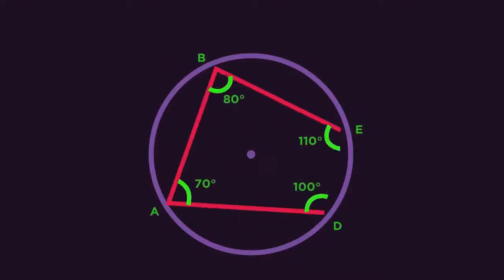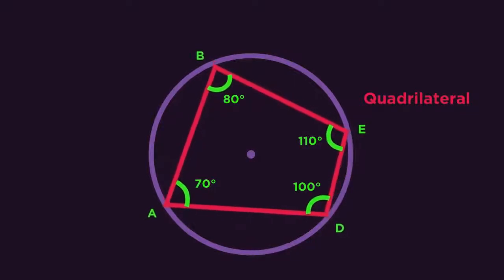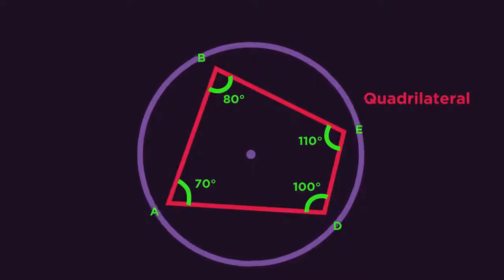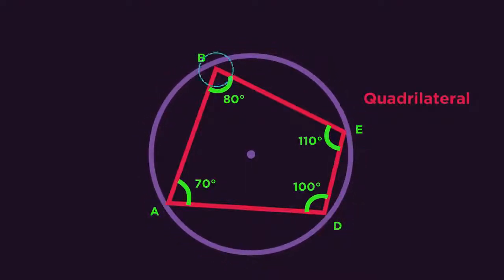It's got four sides, so it must be a quadrilateral. But because it's inside a circle and all four corners or vertices are touching the circumference, we call it a cyclic quadrilateral.